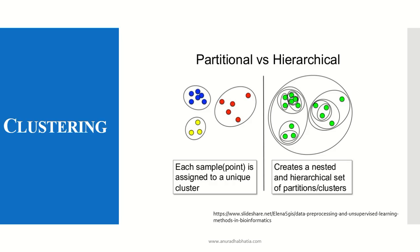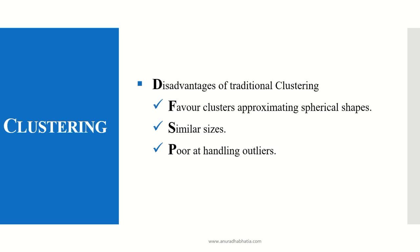This is a simple example which shows the partition and hierarchical approach for clustering. We can see that it partitions on similar colors and forms clusters. Whereas in hierarchical, it takes single data points and keeps joining them using the dmin algorithm. Now the disadvantage of traditional clustering is that it always forms a spherical shape, clusters of similar sizes, and there is poor handling of outliers.